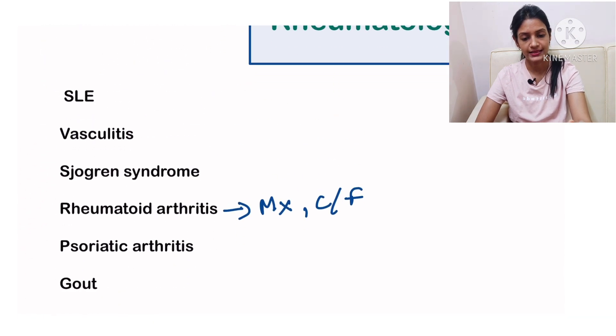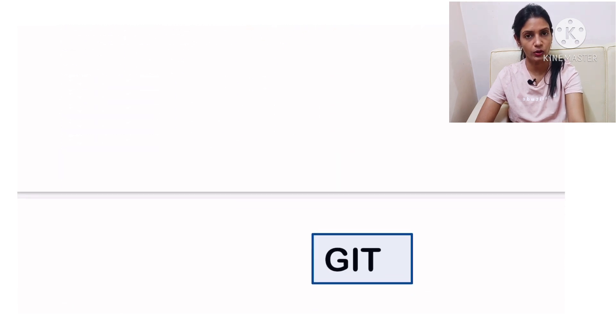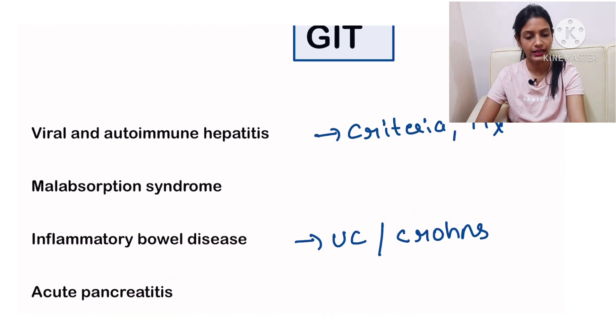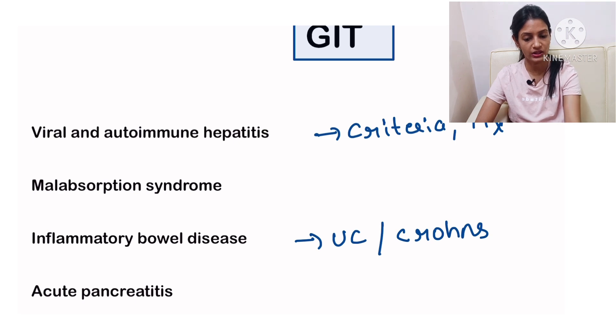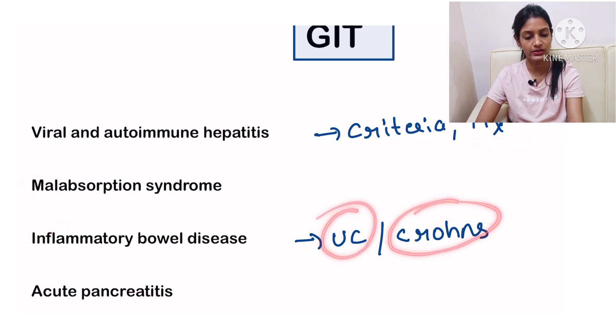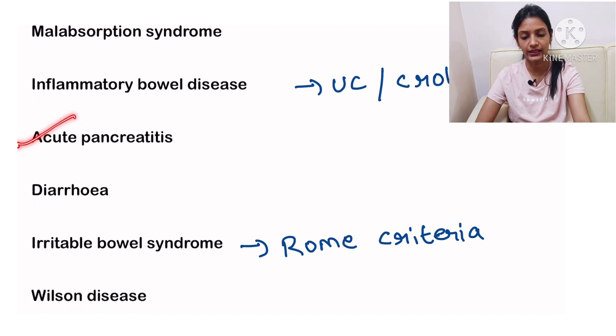The next is GI. In GI they can ask you viral and autoimmune hepatitis, its criteria, management, malabsorption syndromes, inflammatory bowel disease—ulcerative colitis and Crohn's—then acute pancreatitis, diarrhea.